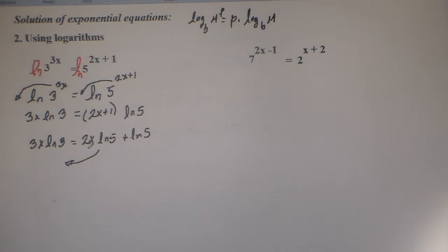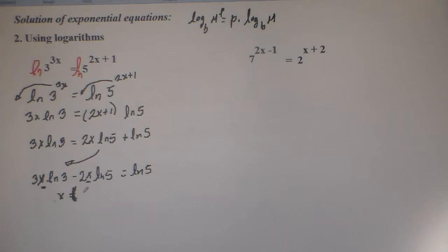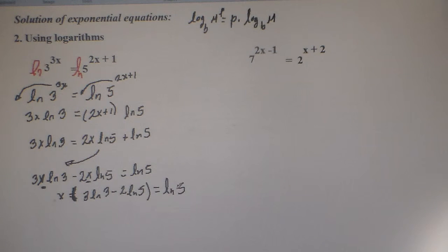We bring the 2x ln of 5 to the left to group the x terms together. We have 3x ln of 3 minus 2x ln of 5 equals ln of 5. Now we are ready to isolate x by factoring x out and dividing both sides by 3 ln of 3 minus 2 ln of 5.